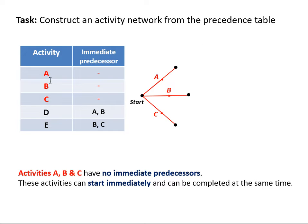First of all, activities A, B, and C each have no immediate predecessors, so we know that's our starting point. Nothing has to be completed before A, B, and C can be commenced. So they start simultaneously, and we have activity A written on this edge, activity B on the center edge, and activity C on the third and final edge.